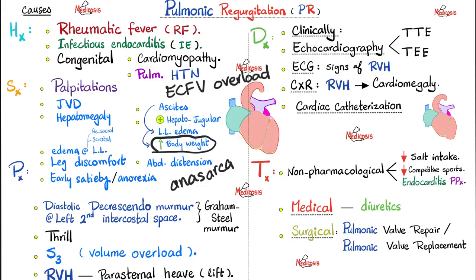For treatment: if mild and asymptomatic, no treatment is needed. If symptomatic, non-pharmacological options include decreased salt intake and decreased competitive sport; if there is risk of endocarditis, give antibiotic prophylaxis. If there are signs of right-sided heart failure, diuretics may help. Surgical options include repairing the pulmonic valve or replacing it — either with a tissue valve known as bioprosthesis, or a metallic valve known as mechanical prosthesis.